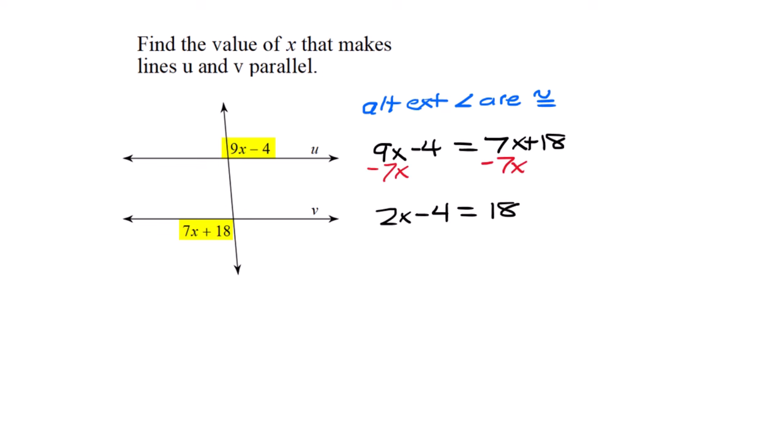9x minus 4 equals 7x plus 18. Subtract 7x, 2x minus 4 equals 18. Add 4, 2x equals 22. X equals 11. Let's check: that angle is 95 and this angle is 95. Yes!